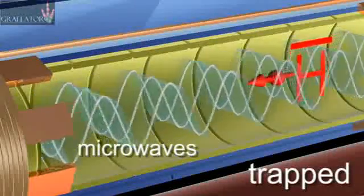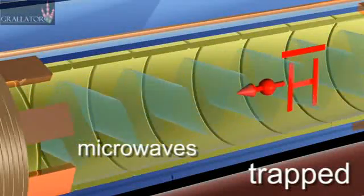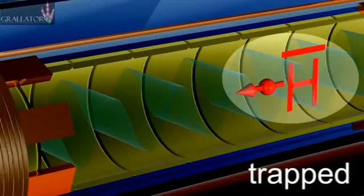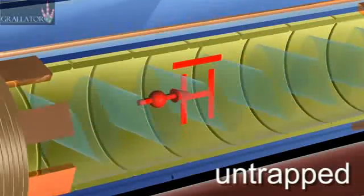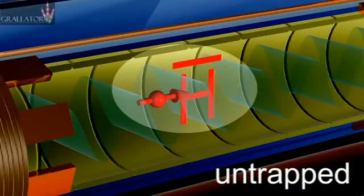It'll happen more slowly here. You see the magnetic moment, sort of like a compass needle in the antihydrogen atom, has to point in one direction for it to be trapped. The microwave radiation flips that magnetic direction, and that means that the atom is untrapped and comes out.